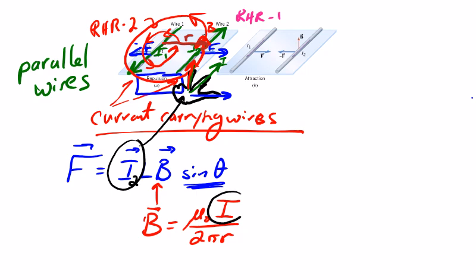The other one, this particular current, would actually be the current through wire number 1, because it's producing the actual magnetic field. So you have the magnetic field being produced by the first one.